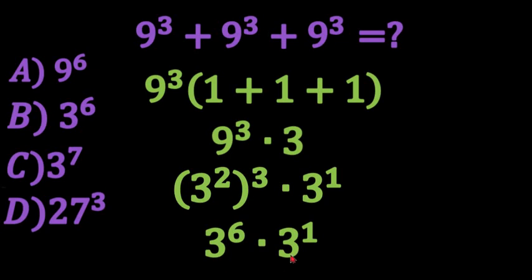And now when our bases are equal and we're multiplying two values with exponents we would add those exponents. So we would have 3 to the power of 6 plus 1. And 6 plus 1 is 7. So we would have 3 to the power of 7.